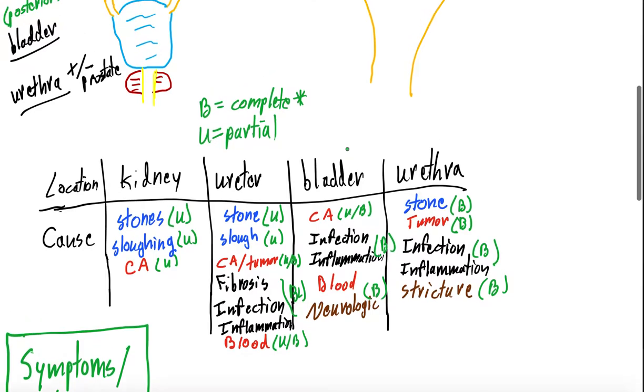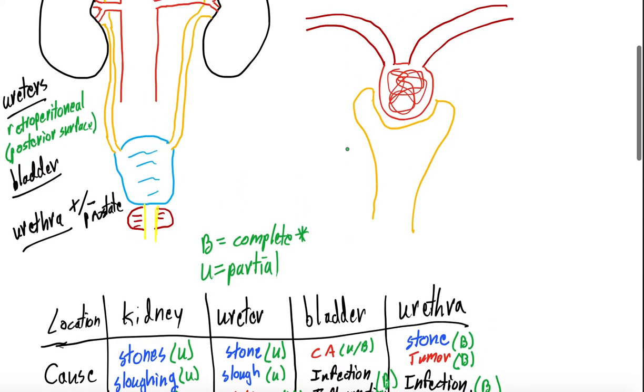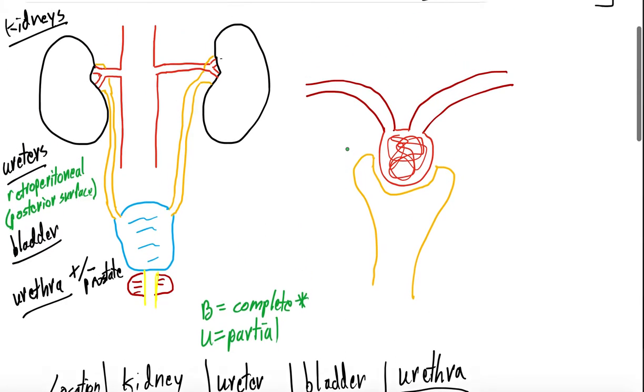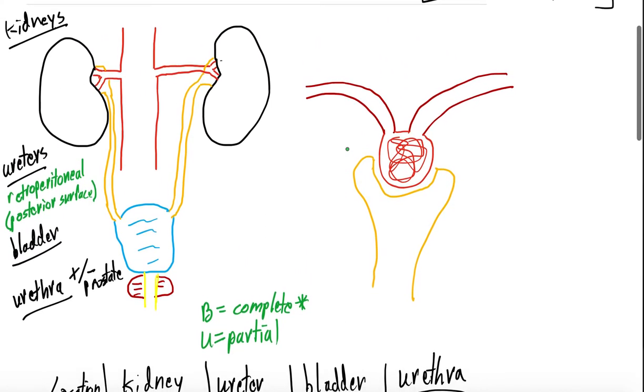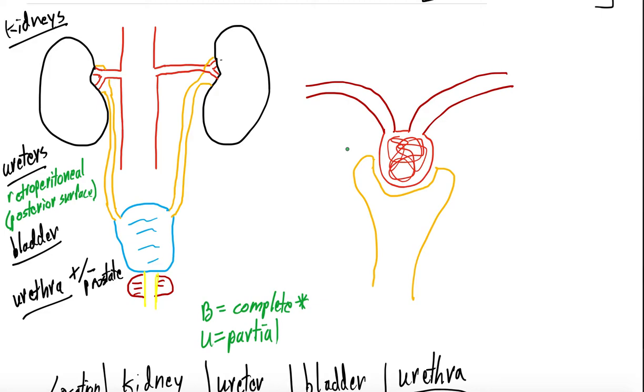So this is a fairly comprehensive list of anatomic etiologies of obstruction, both unilateral and bilateral. Unilateral is also known as partial obstruction, whereas bilateral is known as complete obstruction. We're going to focus primarily on complete obstruction as we discuss pathophysiology, symptoms, signs, and labs. So how does obstruction lead to acute kidney injury, or AKI?